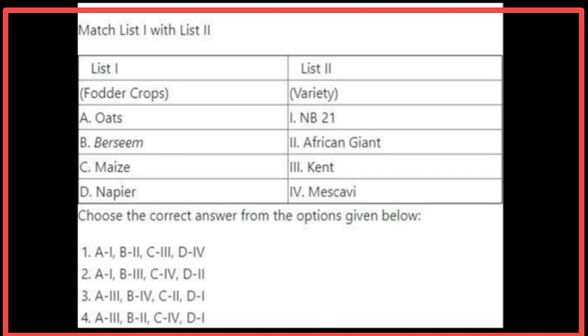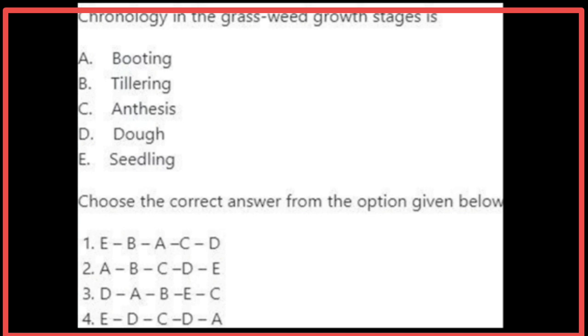Matching List 1 with List 2: The variety of oats is Kent, the variety of berseem is Mescavi, the variety of maize is African Jade, and the variety of napier is NB21. The correct answer is the third option. The chronological order of grass weed growth stages is: seedling, tillering, booting, anthesis, and dough stage. The sequence is E, B, A, C, D — the first option.